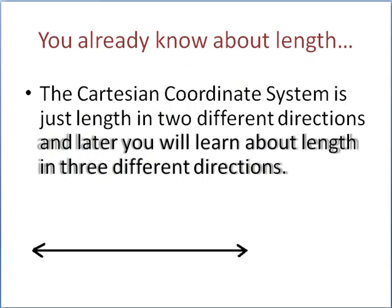You already know about length—inches, feet, miles, things like that. The Cartesian coordinate system is just length in two different directions. Later, you will learn about length in three different directions.